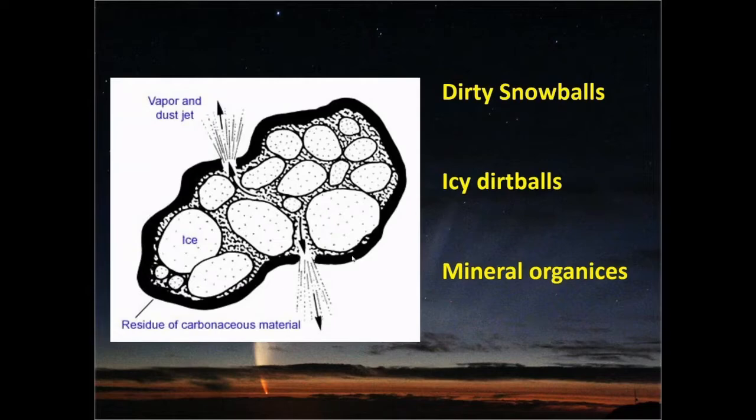So comets have been described several things: dirty snowballs, they're less confident in that, icy dirt balls maybe, mineral organics, they're different ways, but you've got some black carbonaceous material on the outside. And inside there are all sorts of cavities because the density is a little over half of water ice, and there must be all sorts of openings under that because it formed.